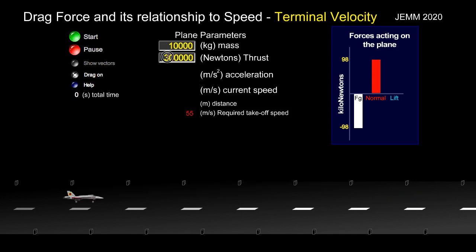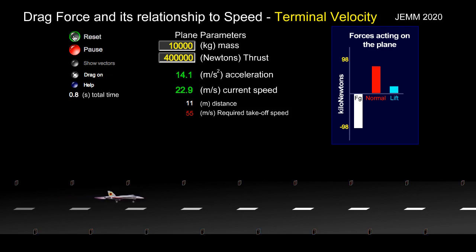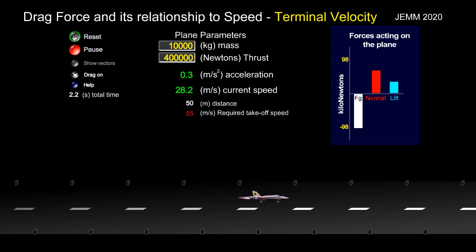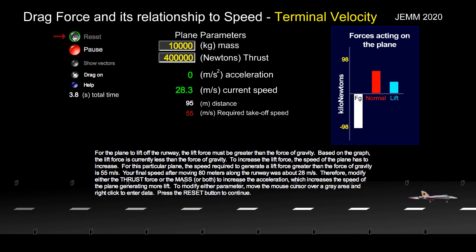Let's try 400,000 newtons of thrust — see what happens. Same thing: the acceleration will eventually hit zero. Notice, however, because it has more thrust, the speed at which it hits zero is greater. In other words, it has a higher terminal velocity.